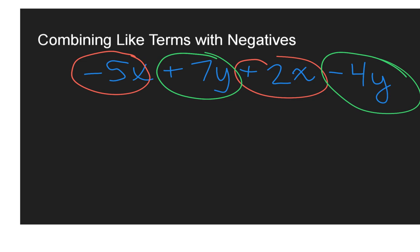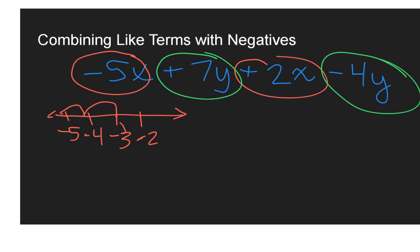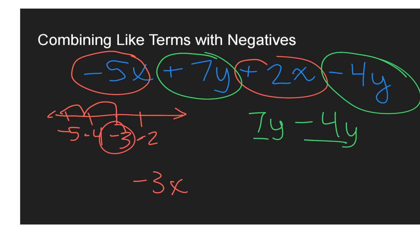When I think about negative five x plus two x, we can think about this like what we learned in our rational numbers unit. If I have negative five plus two on the number line — I'm at negative five and I go up two — I'm going to land at negative three. So my coefficient, the number in front of the x, is going to be negative three x. Then for the y's: positive seven y minus four y. Seven minus four is going to leave me with a positive three. So the simplified version of the original expression is negative three x plus three y.